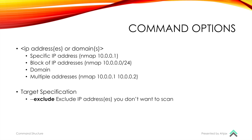With IP addresses or domains, you can either do a specific domain or IP address, or you can also do a block of IP addresses. If you're unfamiliar with CIDR notation, I recommend reviewing that. For example, 10.0.0.0/24 means we're going to scan all of the hosts on the last section of the IP address — in that case it's going to be about 255 hosts. You can also scan a specific domain, such as www.whatever the domain is.